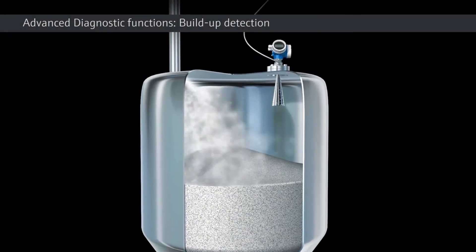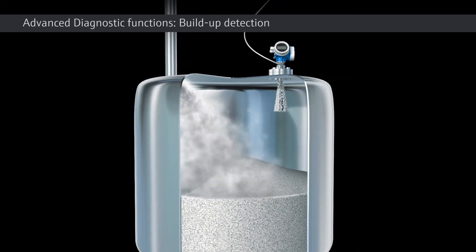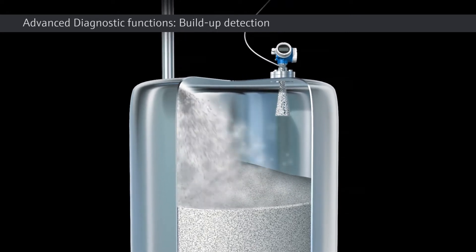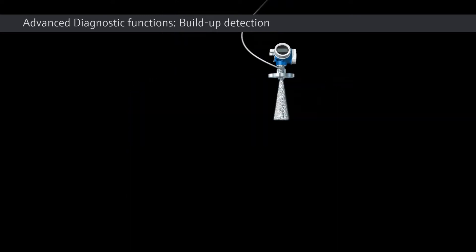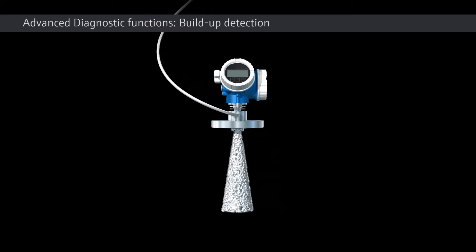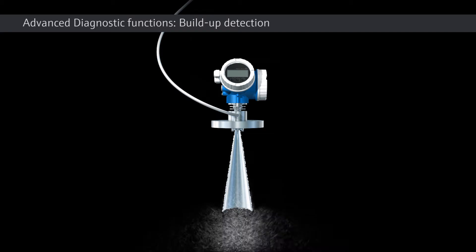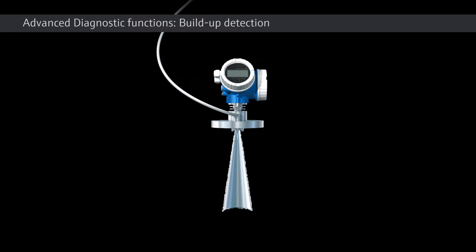Buildup can form on the antenna of level instruments in applications involving bulk solids. These deposits may lead to incorrect measured values, thus exact measurements are not possible. Regular cleaning of the antenna in fixed intervals will ensure reliable measured values, even in the absence of buildup the cleaning is working.